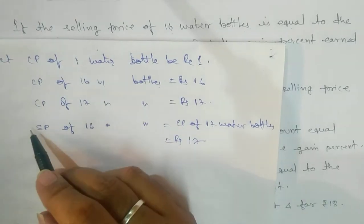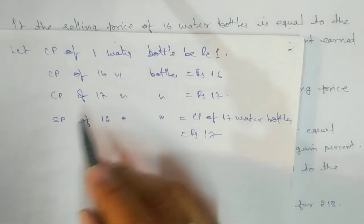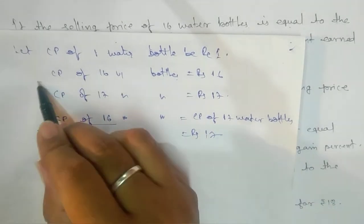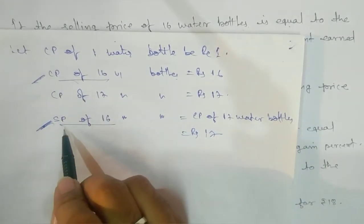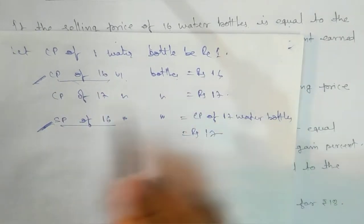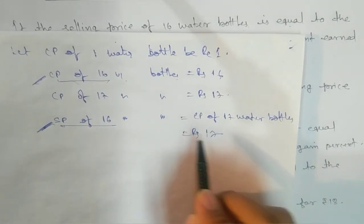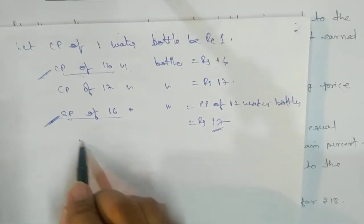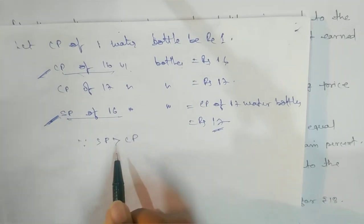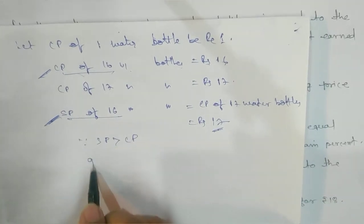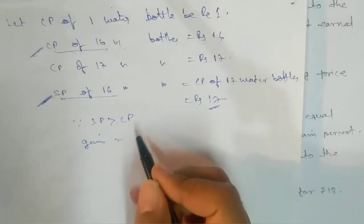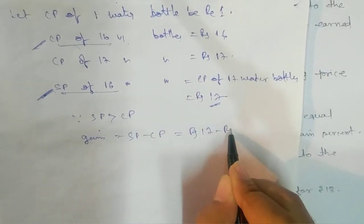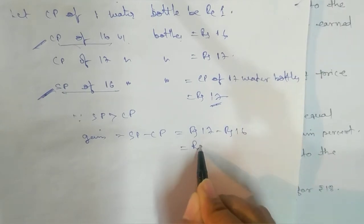Whenever we decide gain or loss, we need to compare the same quantity. CP of 16 water bottles = ₹16, and SP of 16 water bottles = ₹17. Since SP is greater than CP, there is a gain. Gain = SP − CP = ₹17 − ₹16 = ₹1.